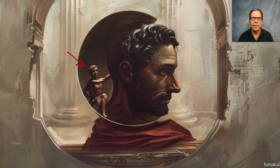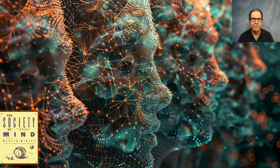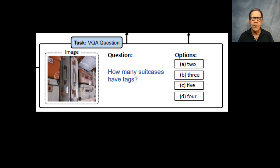If you had lived centuries ago and were trying to figure out how your mind works, you might have decided that maybe there's something called a homunculus — a little man sitting inside your head directing your activities. Or if you're a developer today, you might assume you need to be that little person, writing code that designs all the rules and processes up front. But the society of the mind framework is an alternative view.